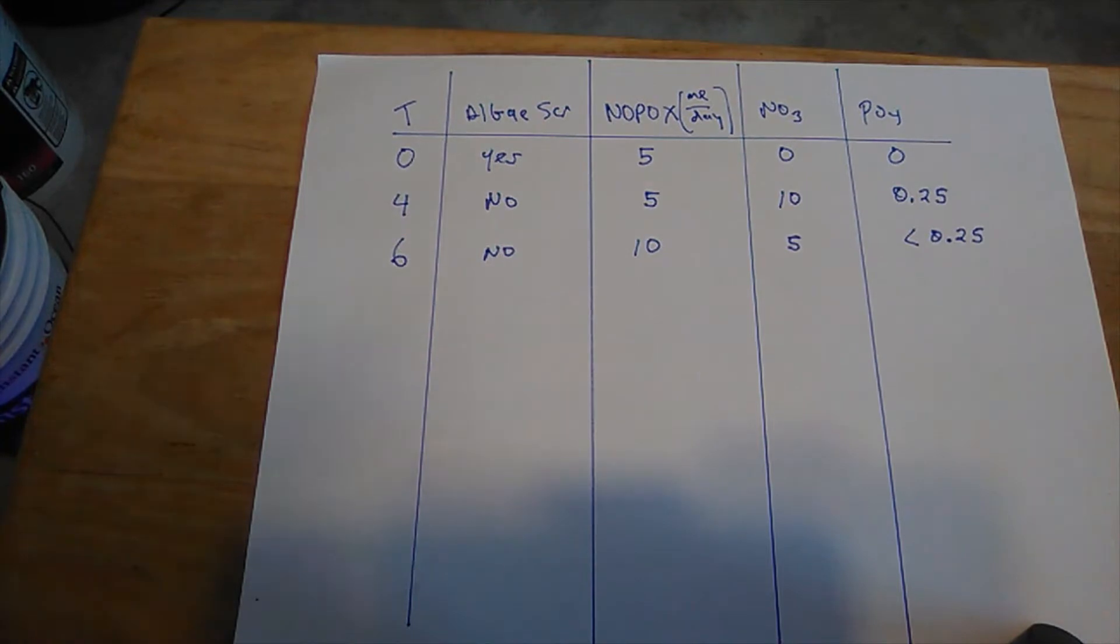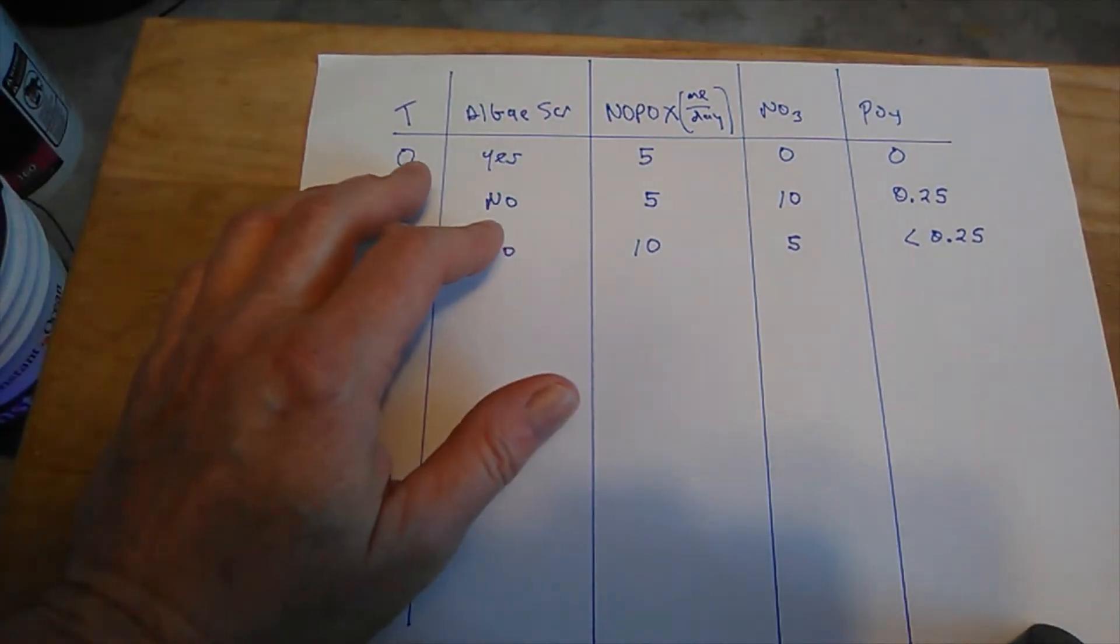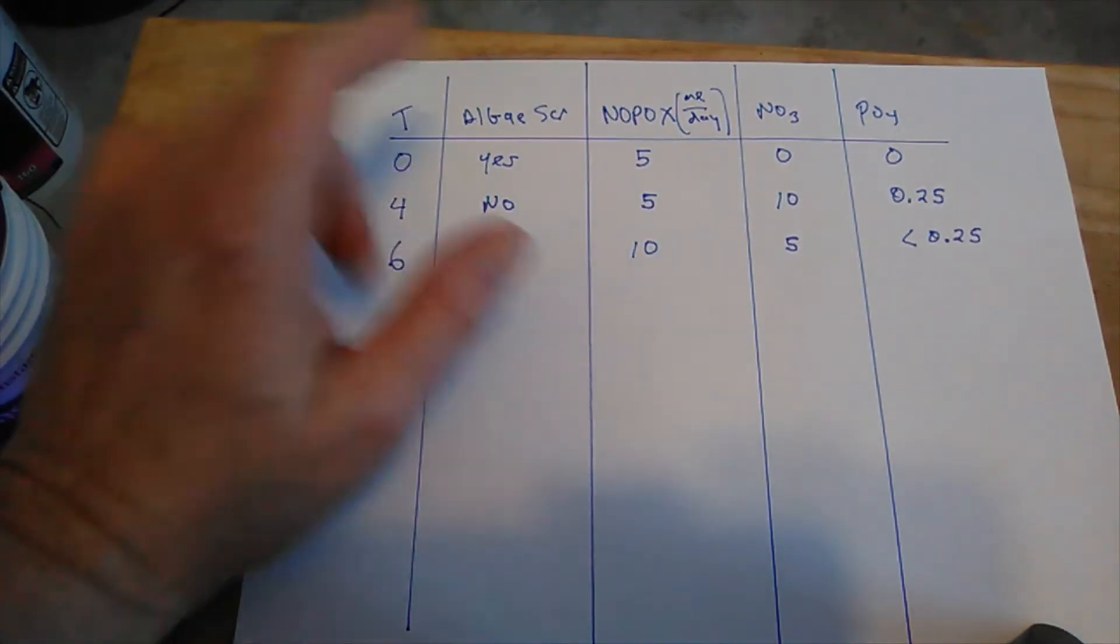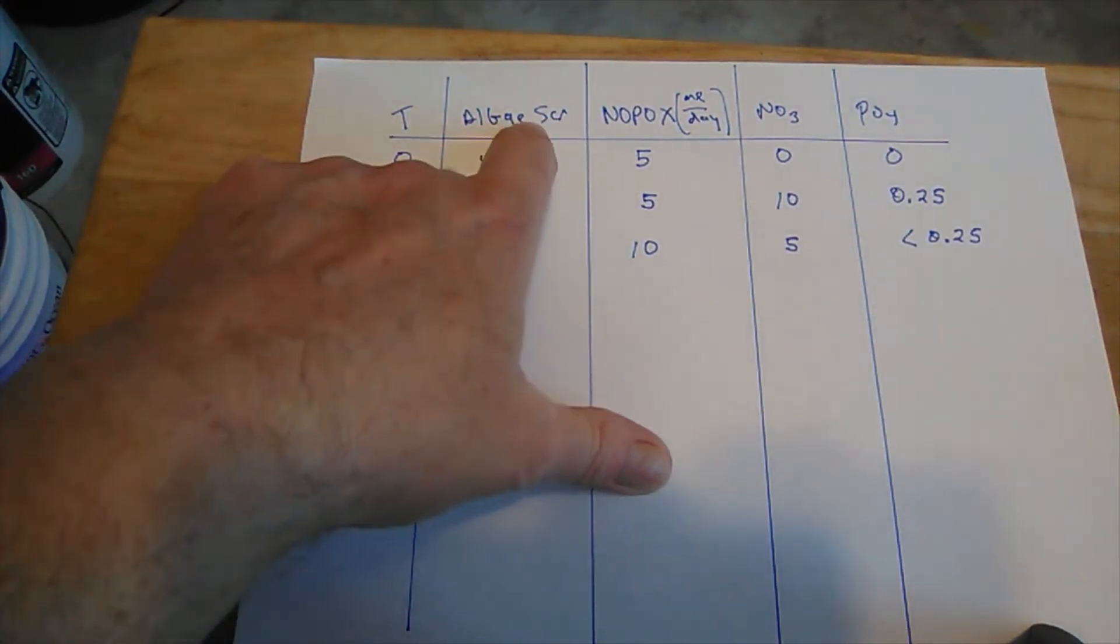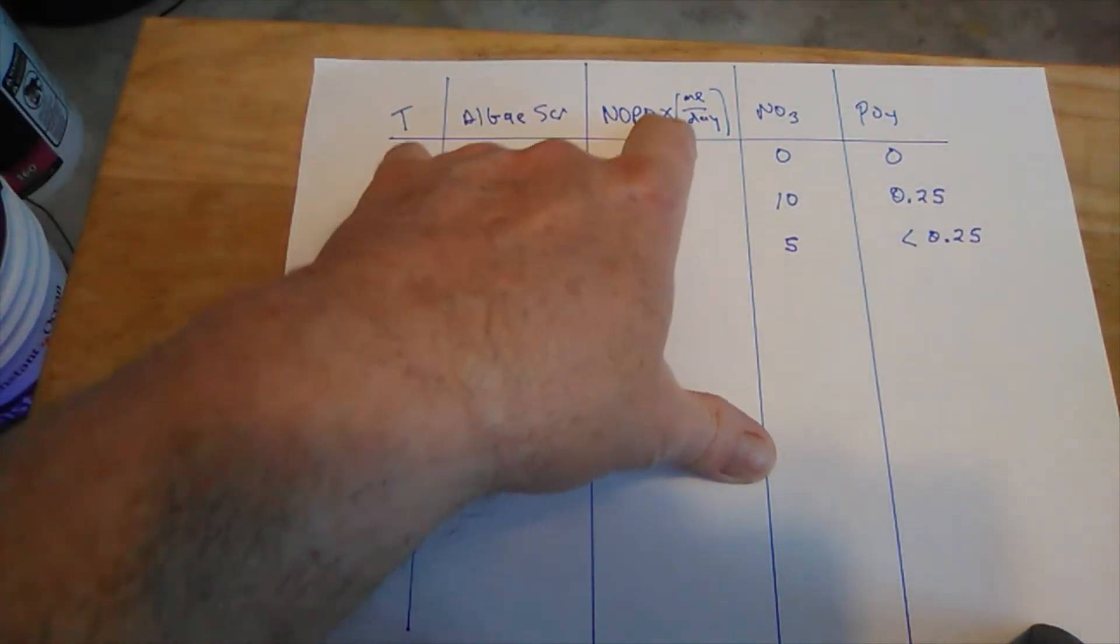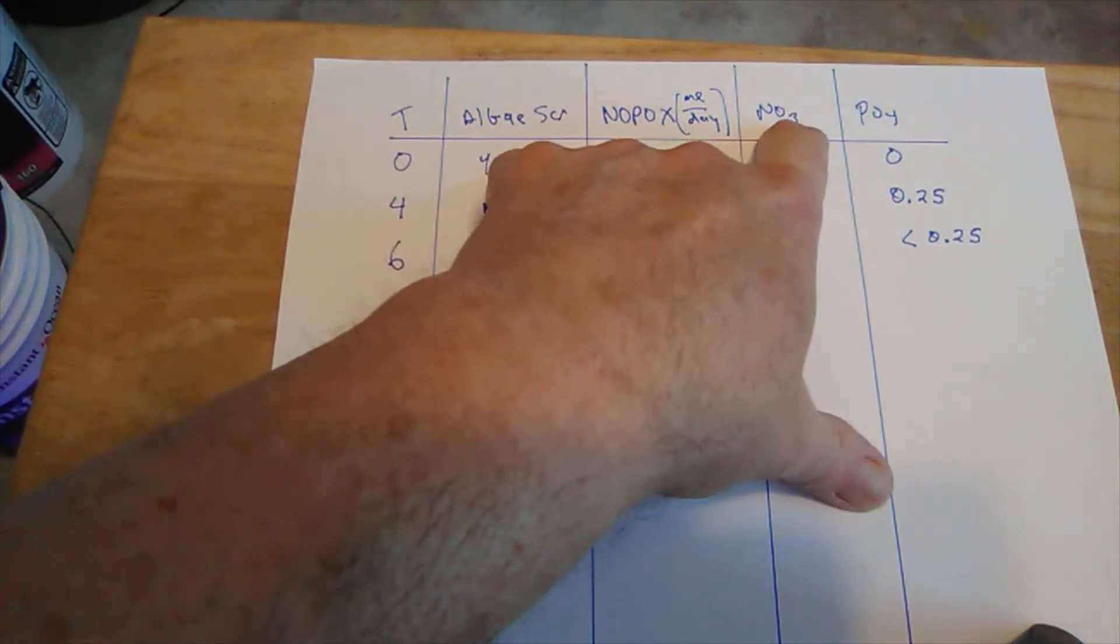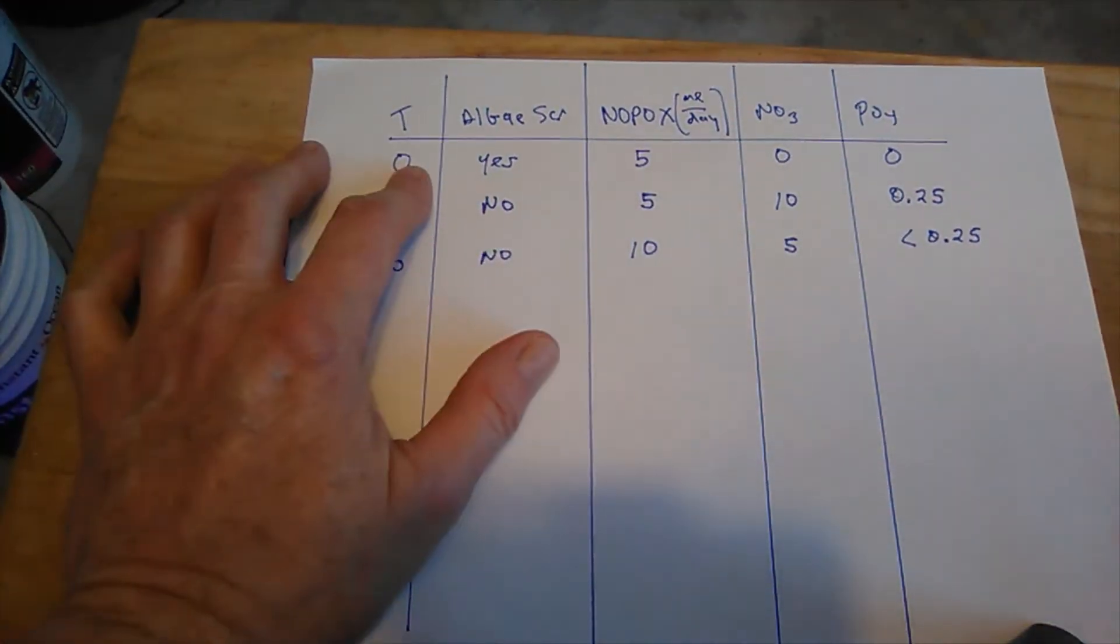This video has gotten confusing because that's how my brain works. So I did a timeline here. We've got time, the algae scrubber in use or not, the amount of NOPOX I'm dosing per day, my NO3 reading in parts per million, my PO4 reading in parts per million. Nitrate, phosphate.